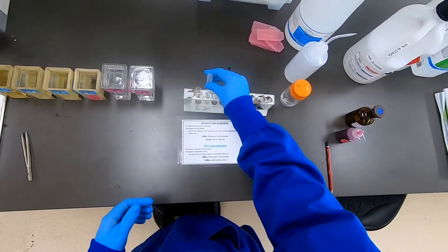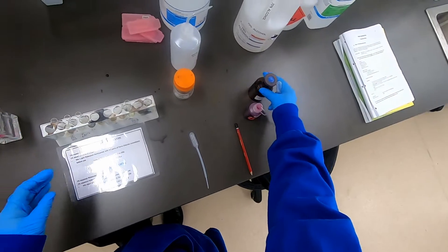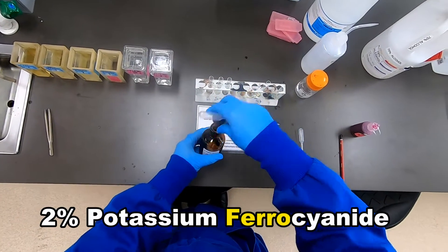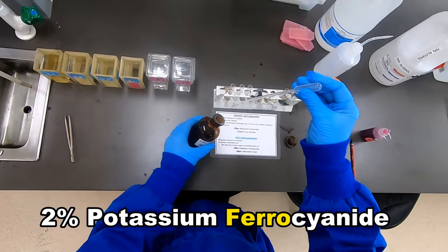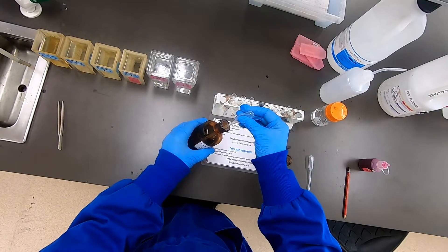The next reagent is the potassium ferrocyanide. It's important to always check that you have the correct reagent so as not to confuse it with potassium ferricyanide used in the Schmoll's stain.